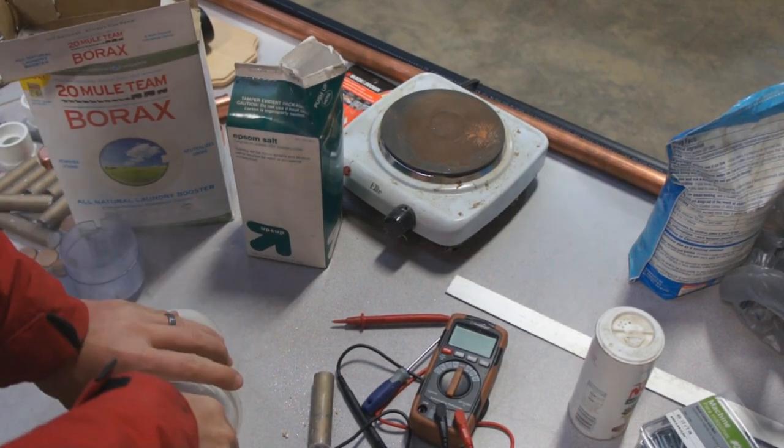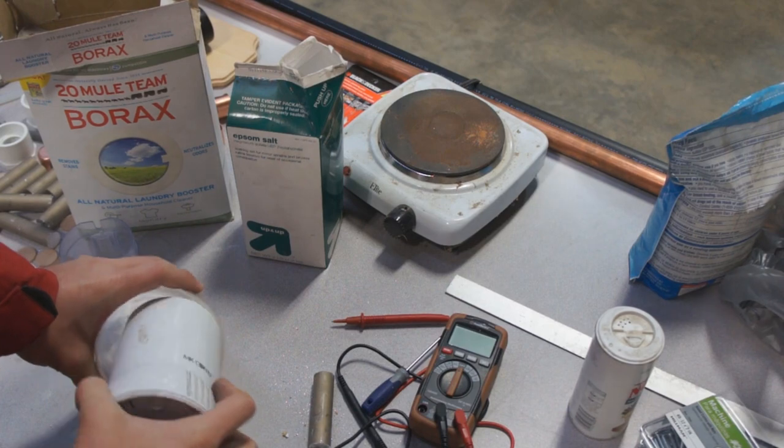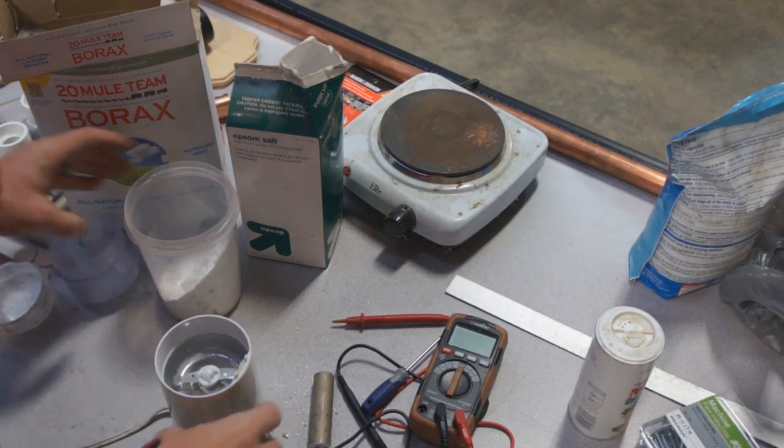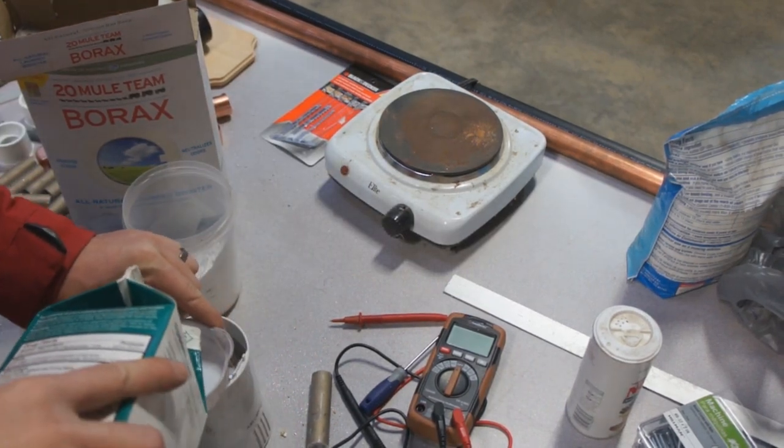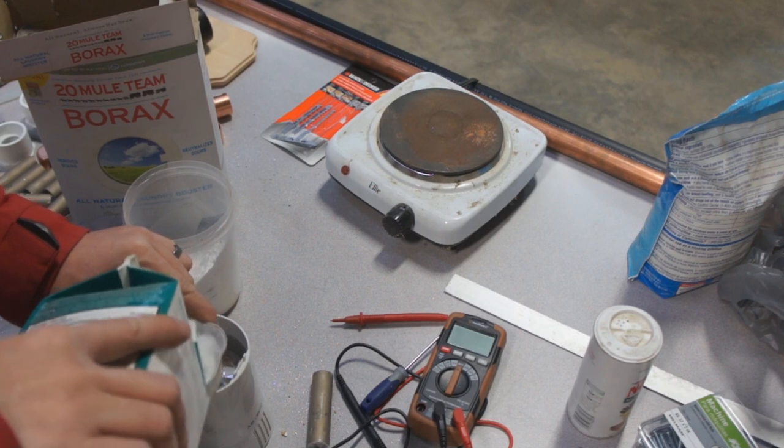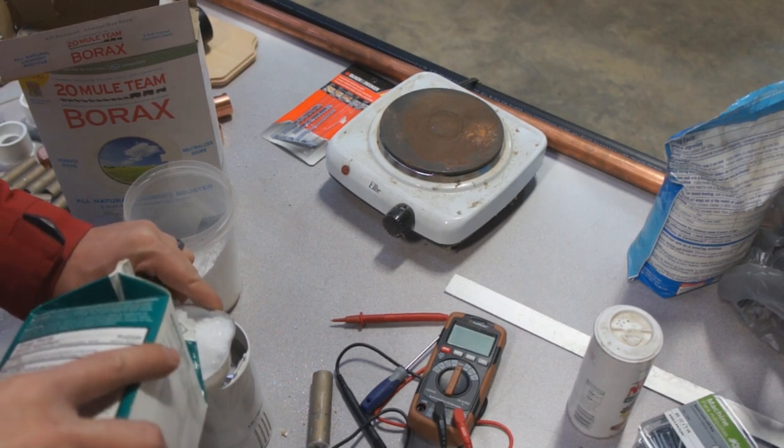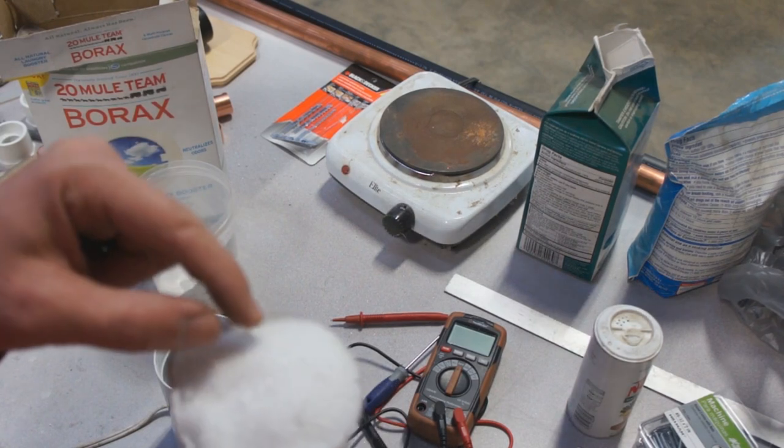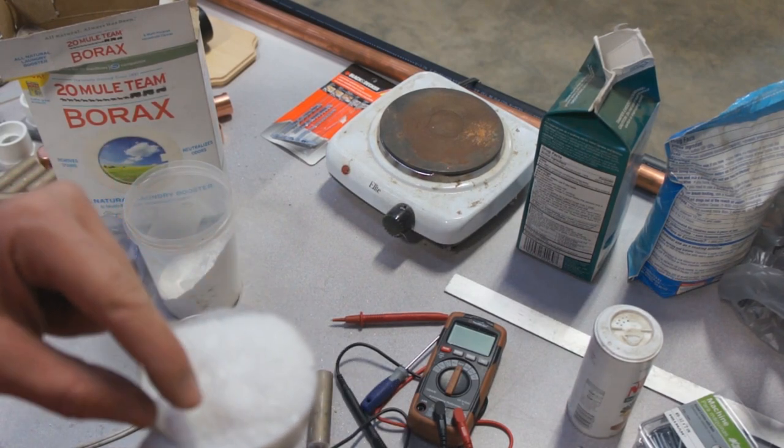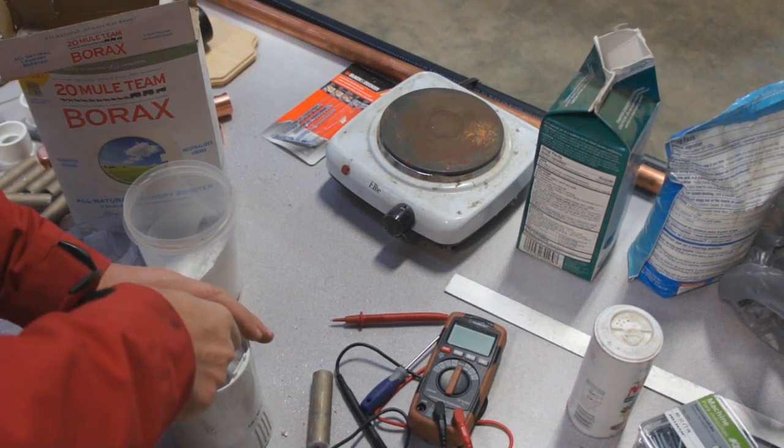That will leave the last ingredient which is the epsom salt and we'll get that in here. So half a cup epsom salt. You can see this stuff is really granular so we're going to have to blend this up a little more to get a good mix.